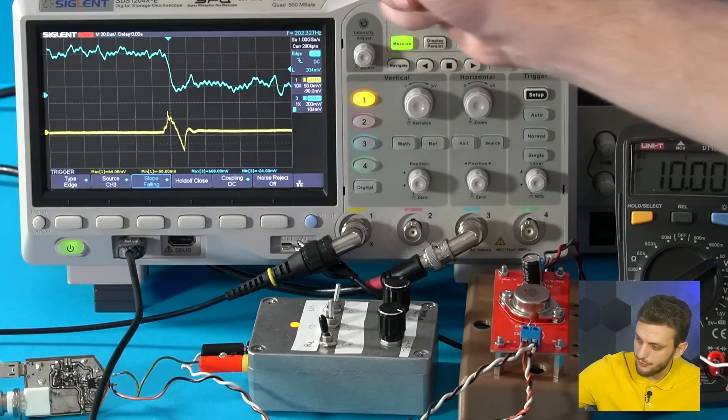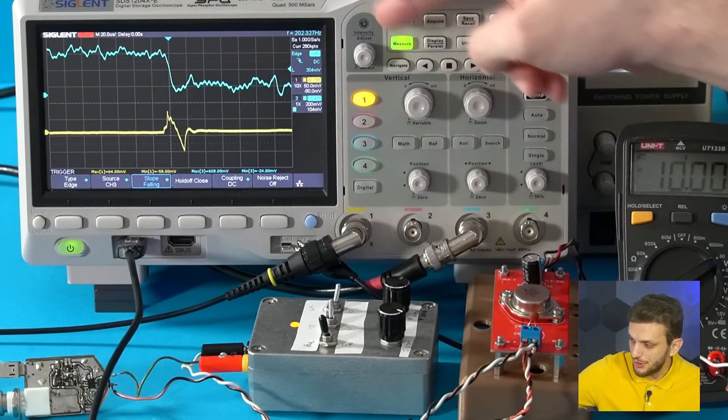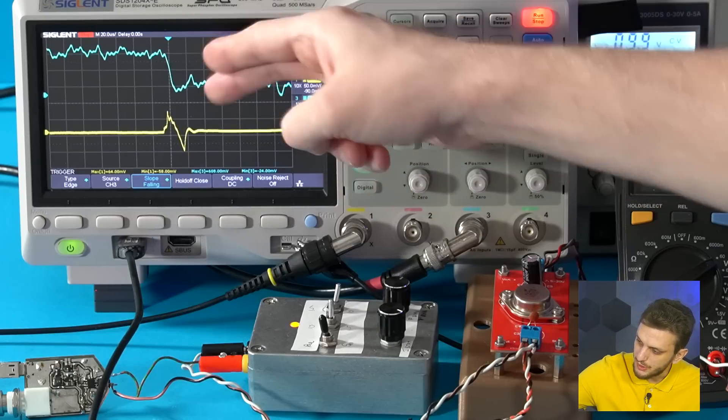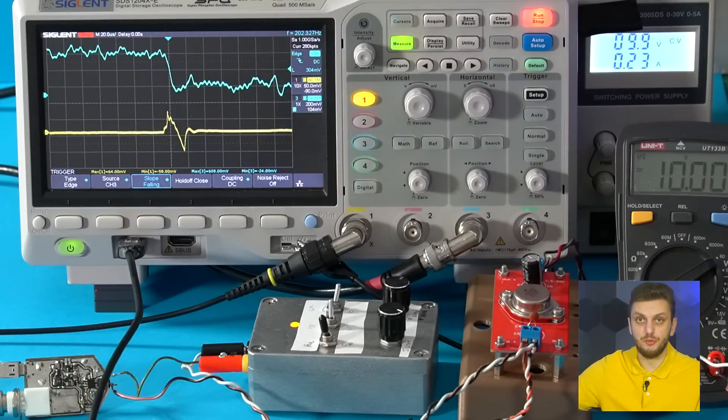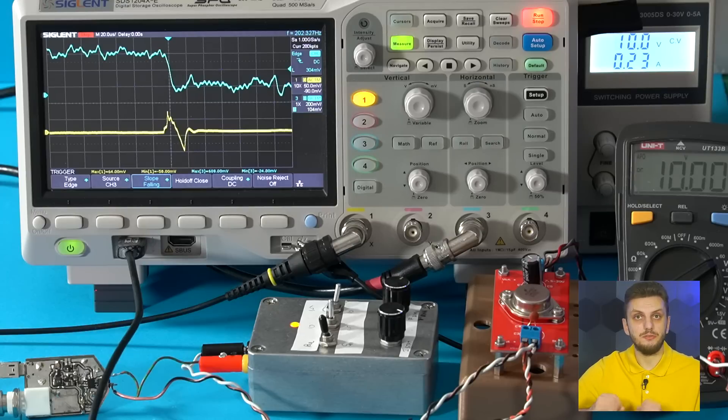When we look at the current falling edge, we see a slightly larger waveform, so I change the voltage base to be 50 millivolts per division. When current drops, first of all, the output voltage rises, and then again oscillates until it stabilizes to a final value.